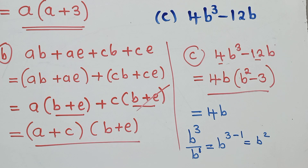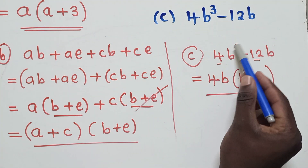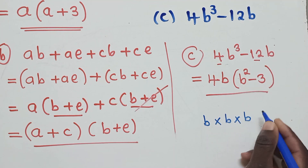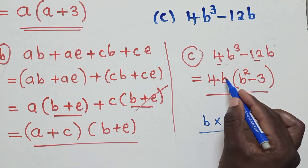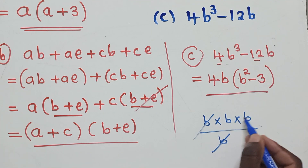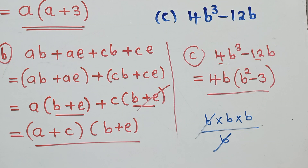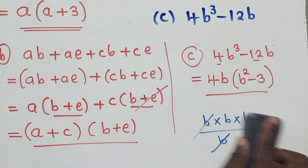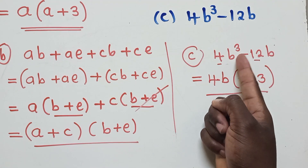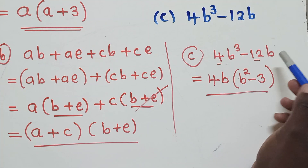Alternatively, if you don't use the laws of indices, just think of it as: b³ means b × b × b, that is three b's. Dividing by one b, you cancel one b and remain with two b's, which is b². So the final answer for question C is 4b(b² − 3).